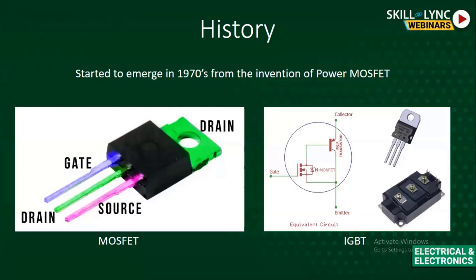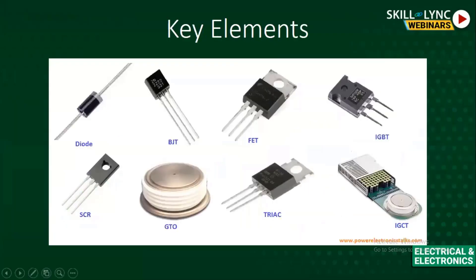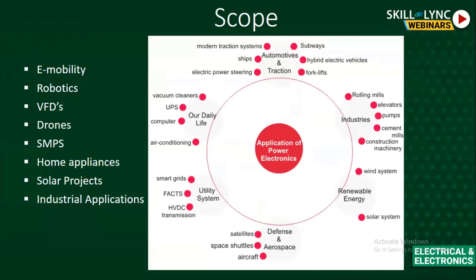IGBTs were introduced in the 1980s, which truly started the power electronics era. The key elements in power electronics are: diode, BJT, MOSFET, IGBT, SCR, and TRIAC. These are the main switching and control elements of power electronics.